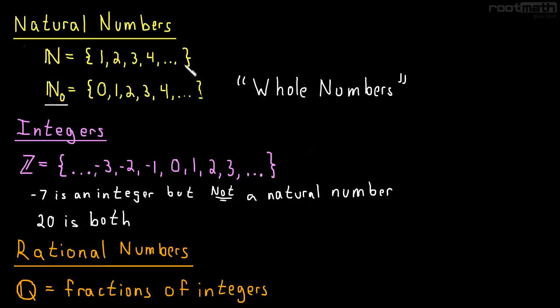On the other hand, something like 20 is both a natural number and an integer. We can clearly count up to 20 in the natural numbers, and if you look at the integers, the integers include all the natural numbers: 1, 2, 3, 4, 5, and so on.